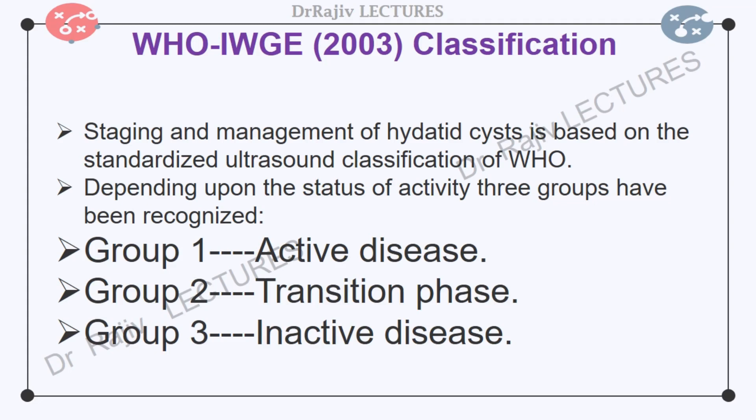In group 1, or active disease, the cysts are larger than 2 cm and often fertile. In group 2, or transition phase, the cysts start degenerating and enter a transitional stage because of host resistance or treatment, but viable protoscolices may be present. In group 3, or inactive disease, the cysts have degenerated, are partially or totally calcified, and do not contain viable protoscolices.